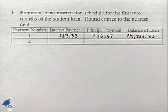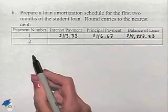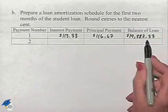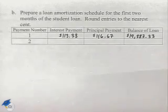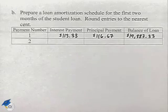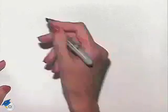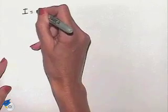Now to figure out what happens in payment two, we're going to simply do the same process but with the different balance. So let's go again to finding the interest payment by using the formula I equals P times R times T.